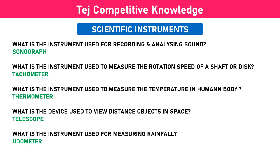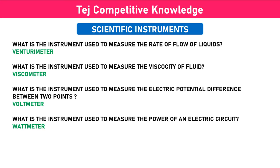What is the device used to view distant objects in space? Telescope. What is the instrument used for measuring rainfall? Odometer. What is the instrument used to measure the rate of flow of liquids? Venturimeter. What is the instrument used to measure the viscosity of fluid? Viscometer.